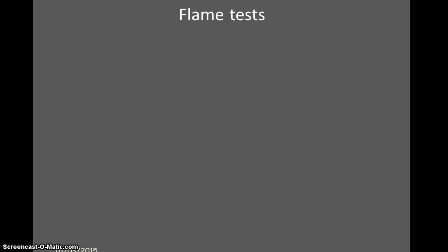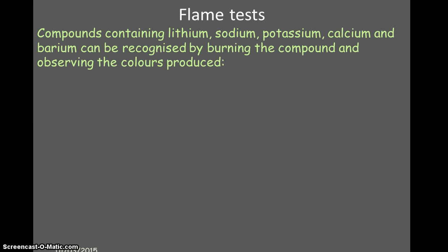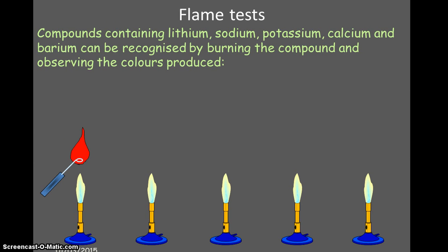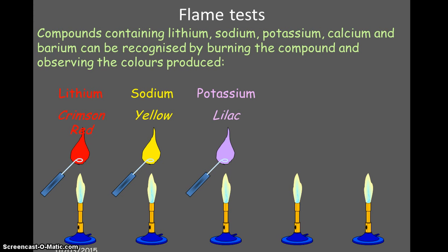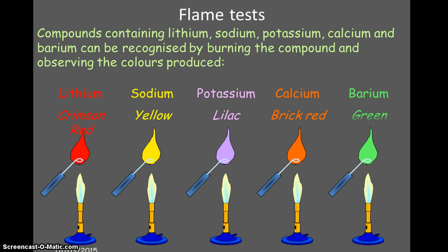First of all we're going to look at flame tests. Flame tests, as the word suggests, involve flames. Different metal ions will give you different colours in a flame test. All you do is take a wire loop, dip it into the compound you're analysing, and then put the wire loop in the flame. A red or crimson red flame means lithium ions are present, a yellow flame means sodium ions, a lilac flame means potassium ions, orange or brick red means calcium, and a green flame means barium.